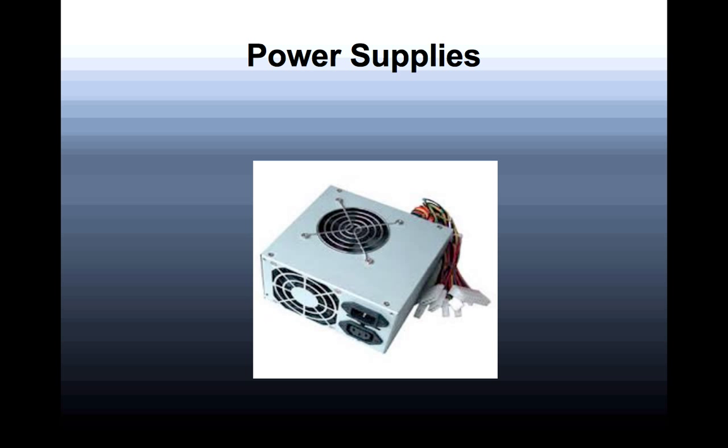Then you have power supplies. Power comes in from a wall jack, and power companies send current in alternating current form — AC is cheaper for them to transmit. The power supply takes that power and supplies the correct amount to the motherboard, but it also converts from AC to DC, from alternating current to direct current, which is what your computer needs to run.